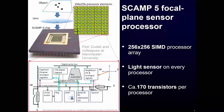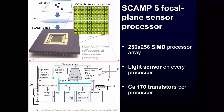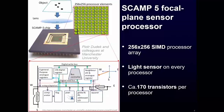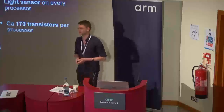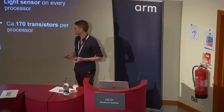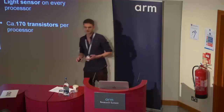What we used was the device developed at the University of Manchester called the SCAMP5 Focal Processing Array. It is essentially an array of 256 by 256 processors on a grid, and every processor has a little light sensor embedded into it. So you can take pictures right at the processor when you mount a lens on top of it.